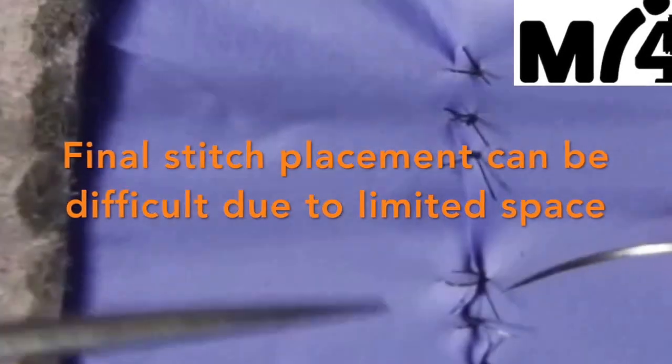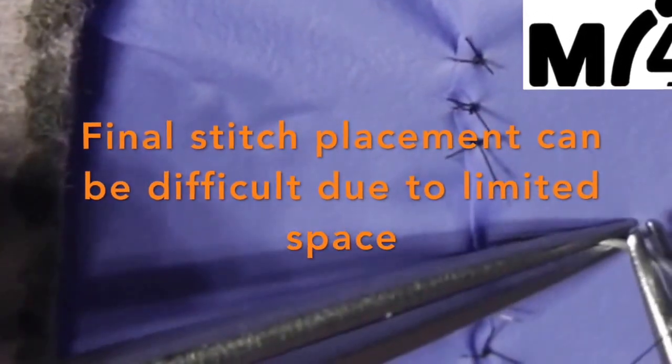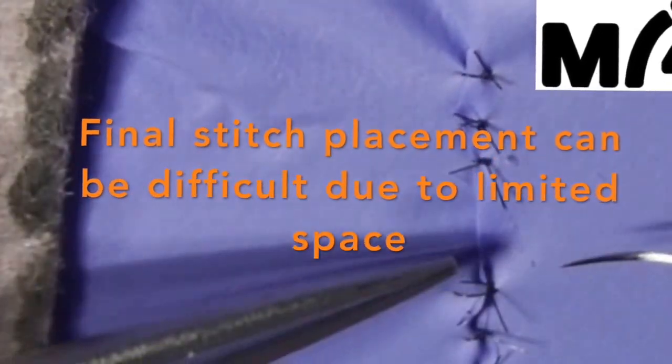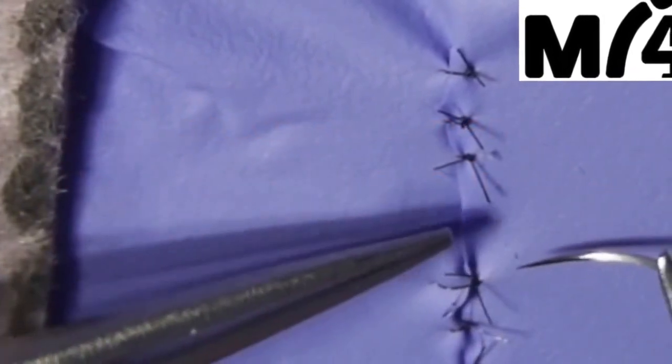I'm going to show you how to do the end-to-near anastomosis, or the loop stitch. You put the loop stitch in at the end of an anastomosis.